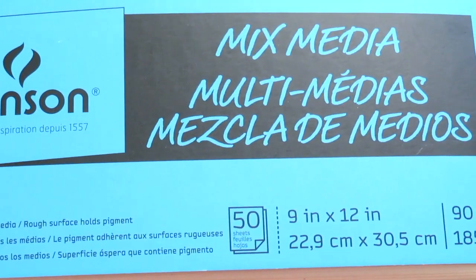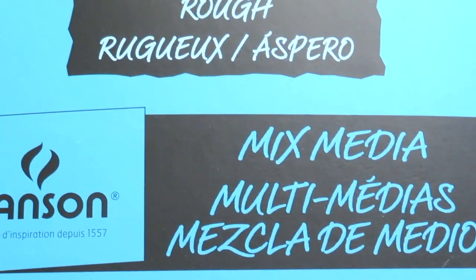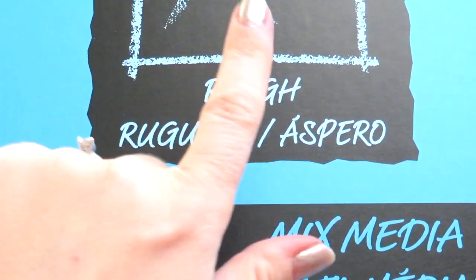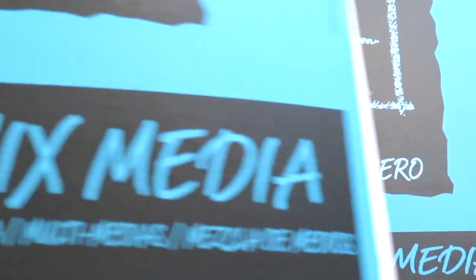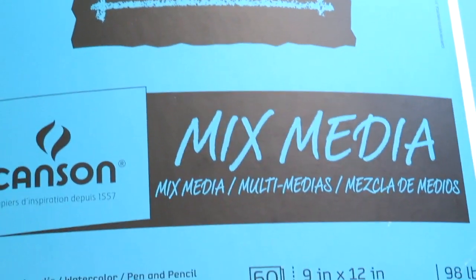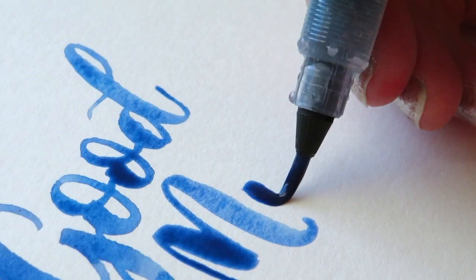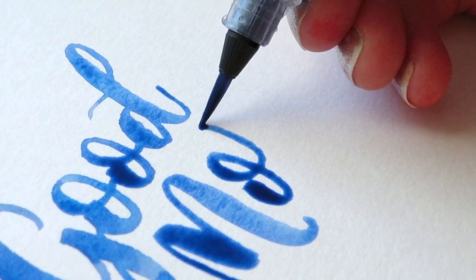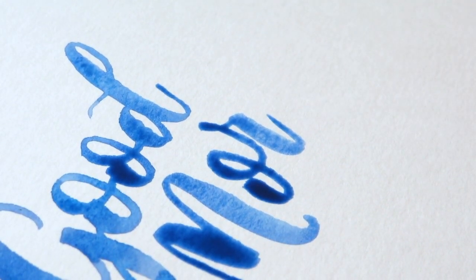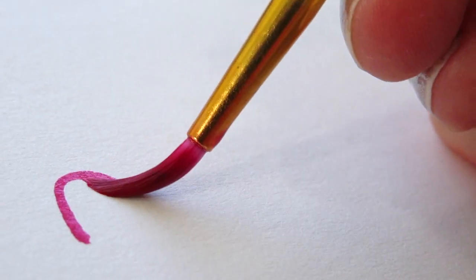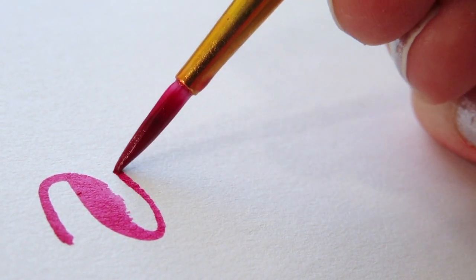Another option is to use mixed media paper or multimedia paper. Just make sure if you're using Canson to take a look at the cover because they have a rough one and a regular one that's not as rough, that's a little bit more smooth. So this is an example of the smooth one and you can see it's got a little bit of texture, but again nothing too crazy.